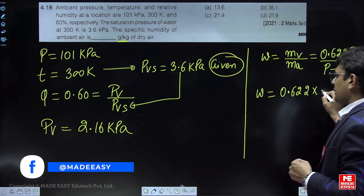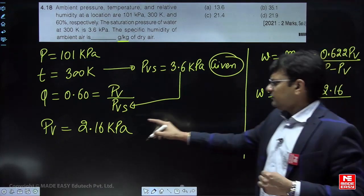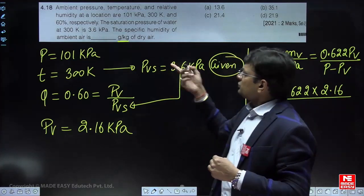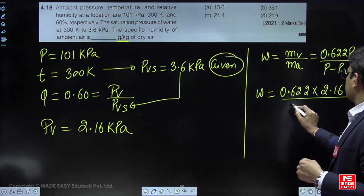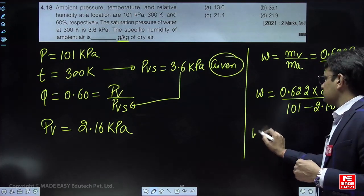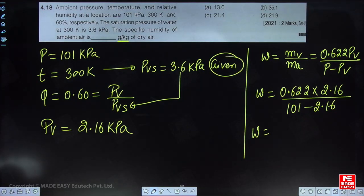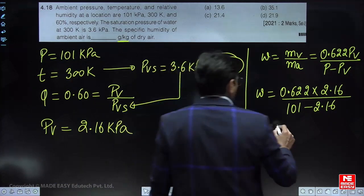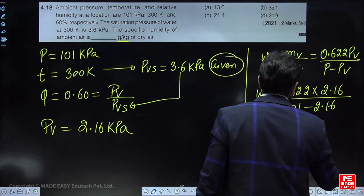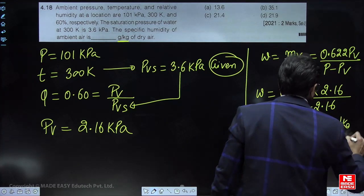From this you will get 0.622 - the value of PV is 2.16, but please take care of the units. The value of PV is in kilopascal, so the total pressure also you have to take in kilopascal: 101 minus 2.16.